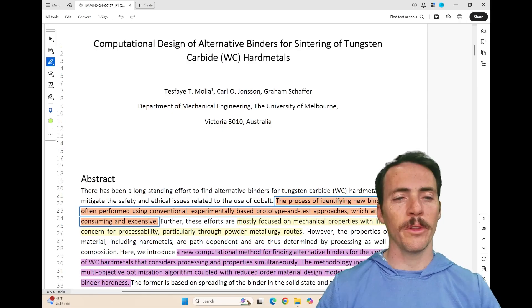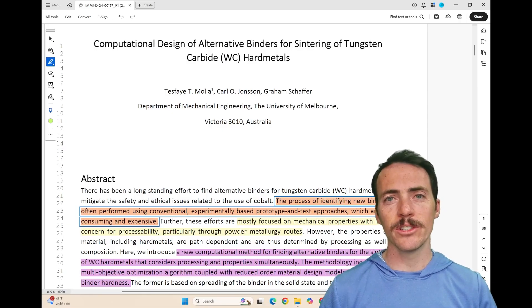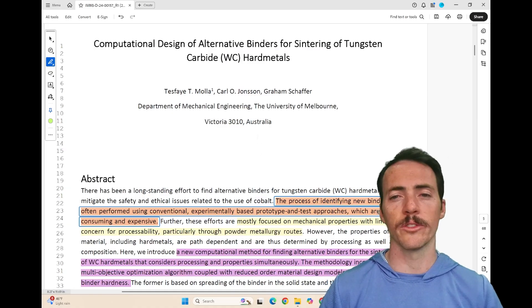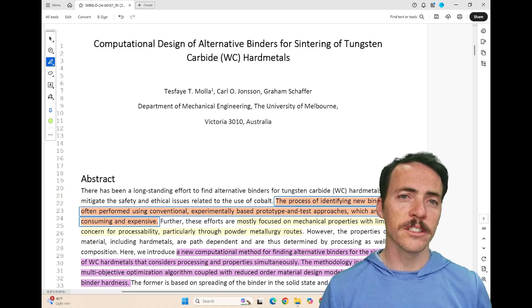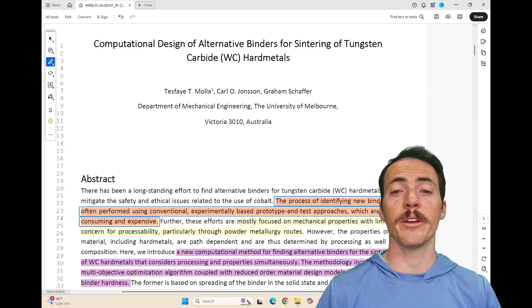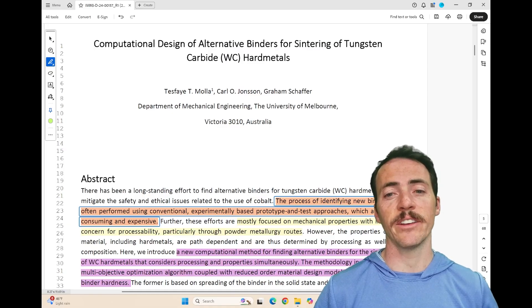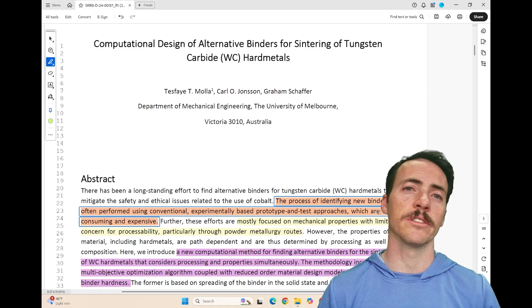And the problems with cobalt, well, there's safety and ethical issues when it comes to using cobalt. We would love to use other materials that aren't cobalt, but the process of exploring them has been predominantly trial and error, prototype and then test approaches, which are not efficient.